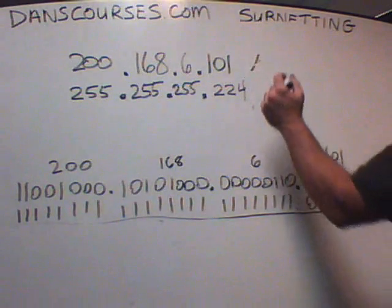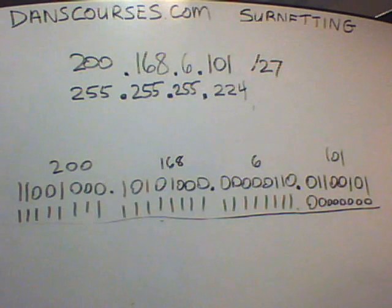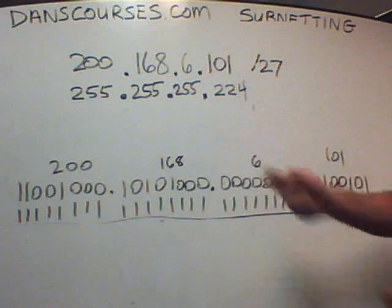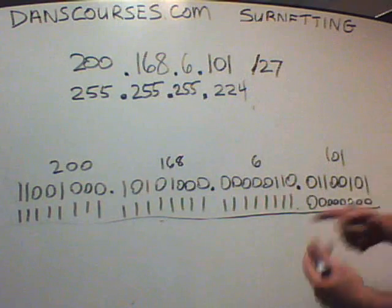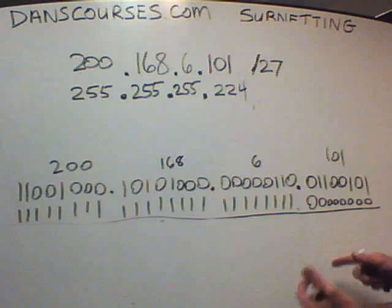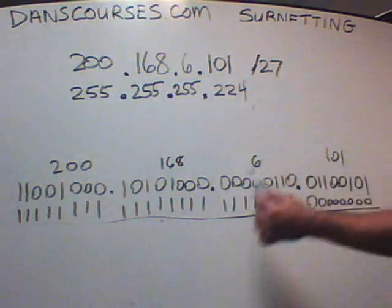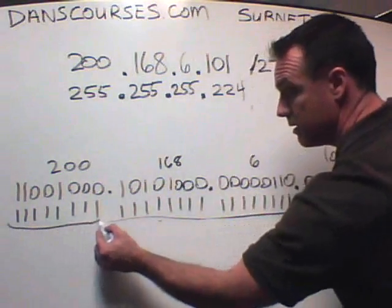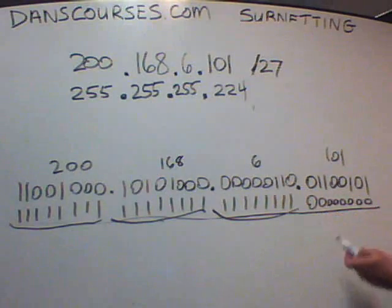It would now be slash 27. You only understand it if you understand it in binary — that's the only way. What it means is, instead of having 24 ones in the subnet mask — eight ones here, eight ones here, eight ones here — we're going to add three more ones to the subnet mask.